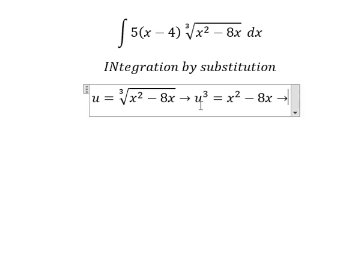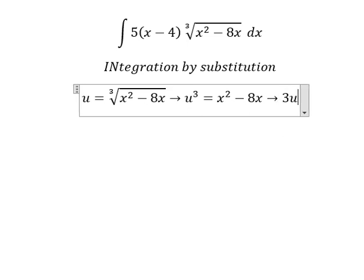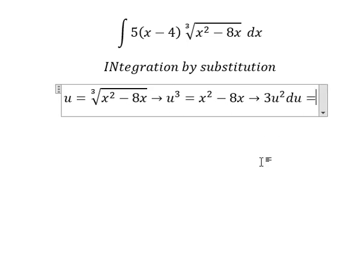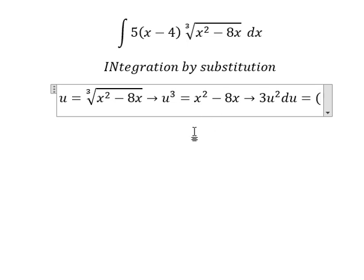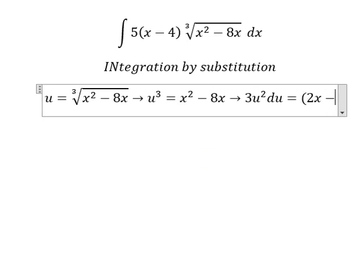Later we need to do the first derivative for both sides. This one, that is 3u squared du. This one, that is 2x. This one, that is number one.